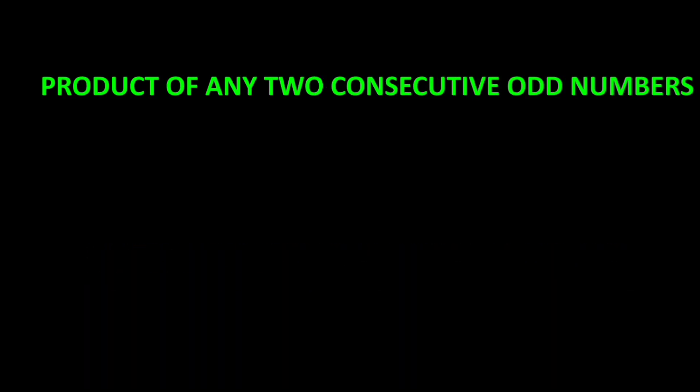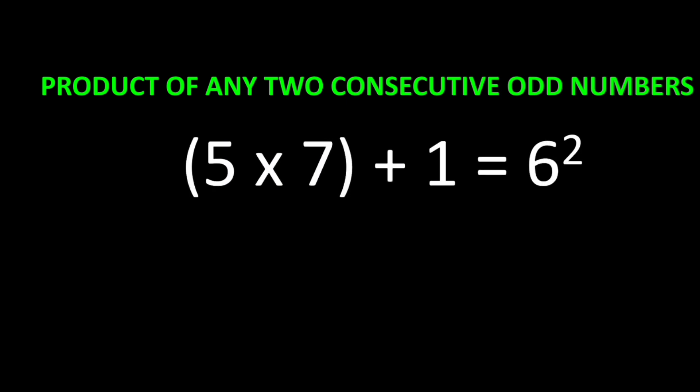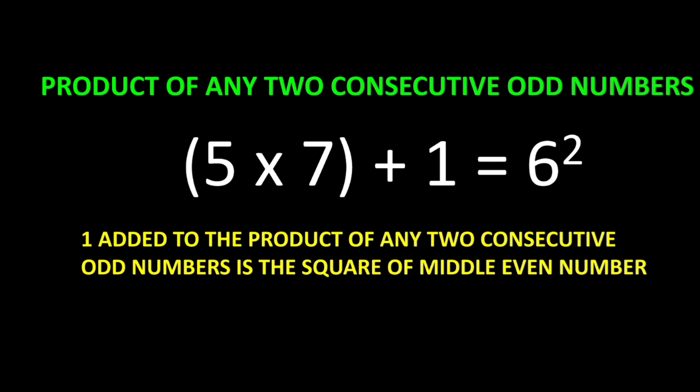In odd numbers also, if we find the product of any two consecutive odd numbers and add 1, we get the square of the middle number. For example, 5 times 7 are two consecutive odd numbers; adding 1 gives the square of the middle even number 6. So 1 added to the product of any two consecutive odd numbers is the square of the middle even number.